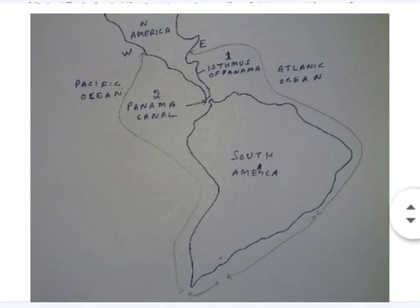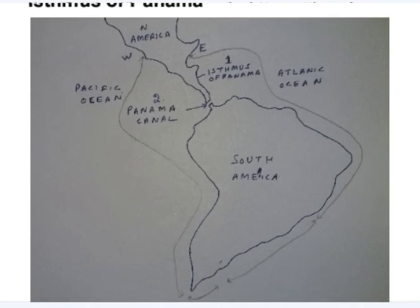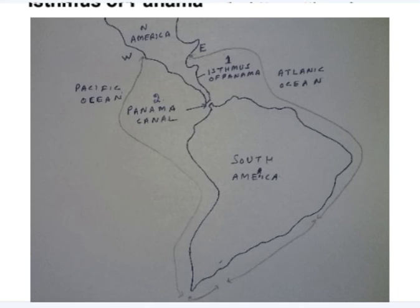The first example is the Isthmus of Panama. In this diagram you can see the Isthmus of Panama labeled one and the Panama Canal labeled two. The Isthmus of Panama links North and South America and separates the Pacific Ocean and the Atlantic Ocean. The Panama Canal intersects through the Isthmus of Panama, allowing ships to travel from the eastern coast of America to the western coast of America without having to go around South America.